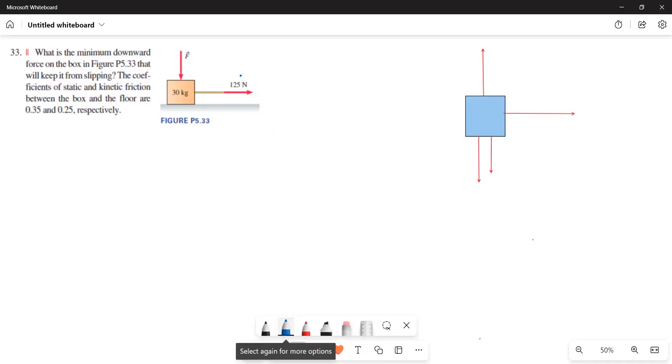Let us write the free-body diagram for the given problem. So the mass of the object is 30 kilograms and then applied force is 125 newtons. And then Fg this one and then Fn this one.